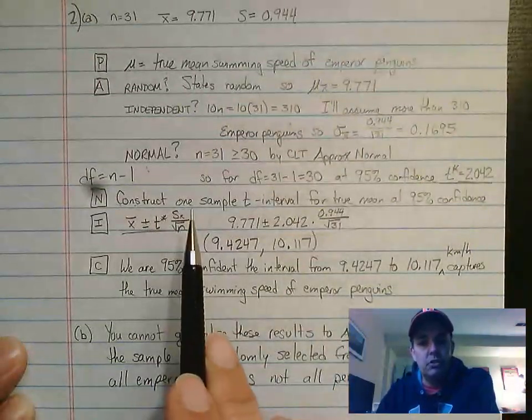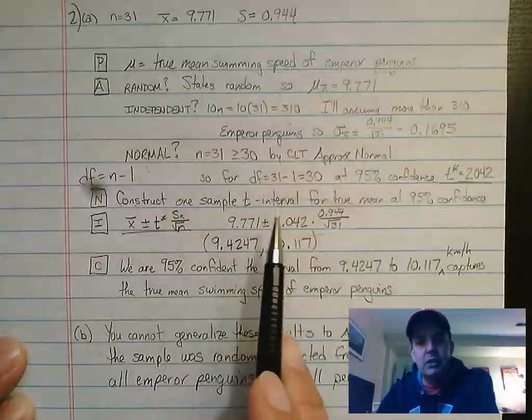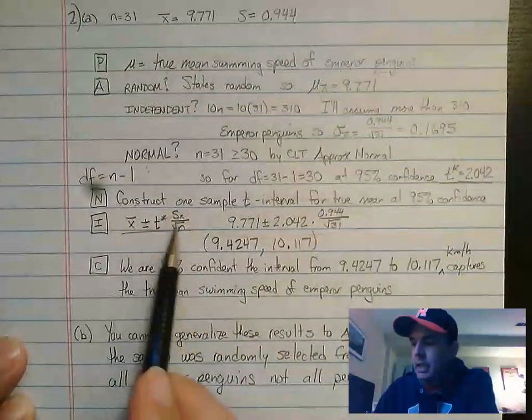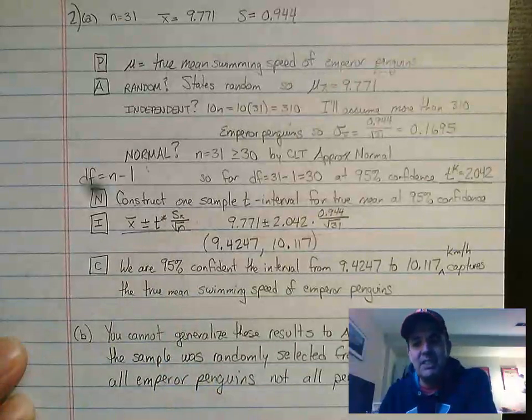Now what we're going to do is construct a one sample t interval for true mean at 95% confidence. This formula is on the formula sheet. We'll do a video that'll talk about that.